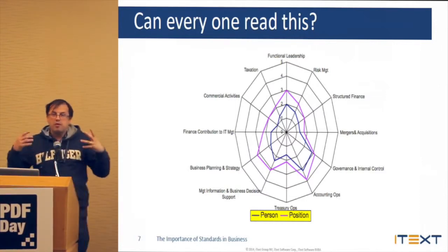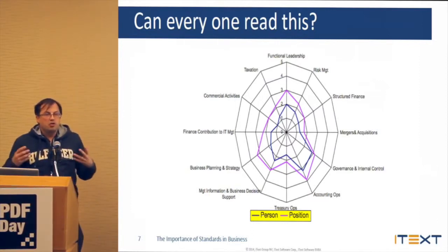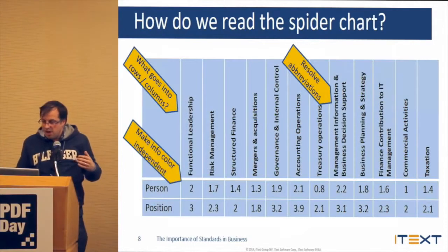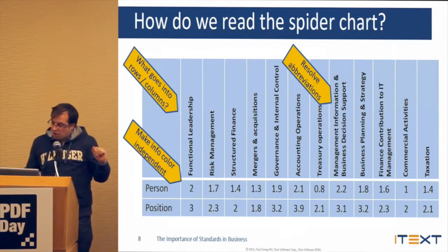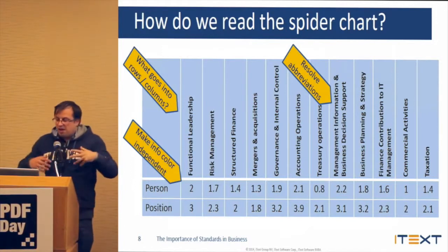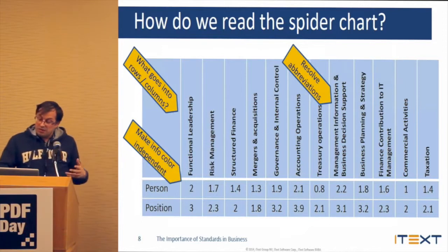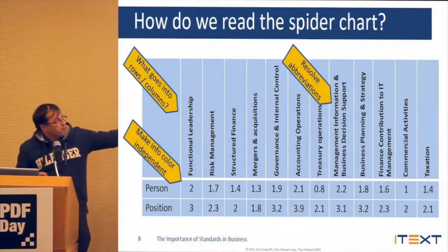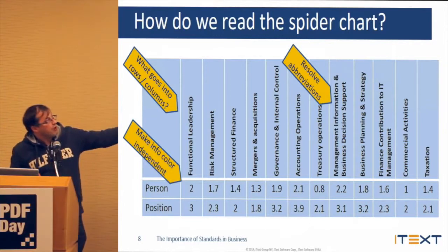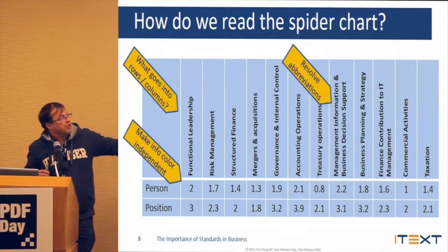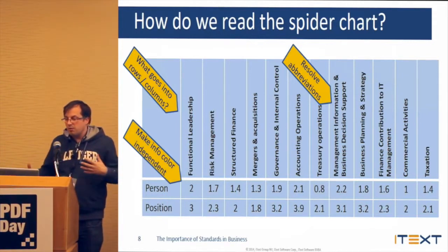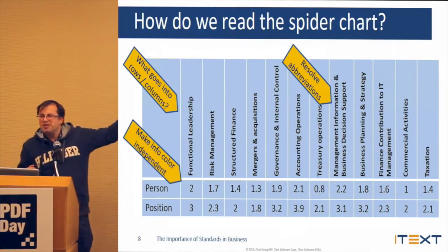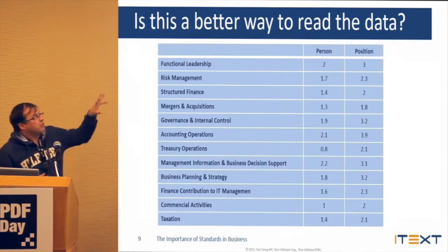So what we would do if we create a PDF-UA document: we will add extra information to the document. We will still show the spider chart, because it's an interesting graphical representation of data. But we will resolve abbreviations — so MGT, Info, Business, Decision Support — we'll say management instead of MGT. We'll make the info color independent. For instance, we'll say this person's value for functional leadership is two, and he needed three. And we'll make a decision about what goes into rows and what goes into columns. I intentionally made this table this way, because that's probably not how we are going to read this table — we are probably going to read this table this way.